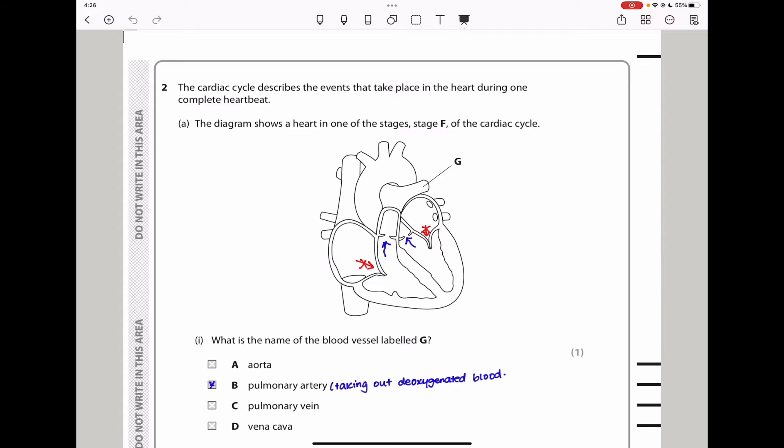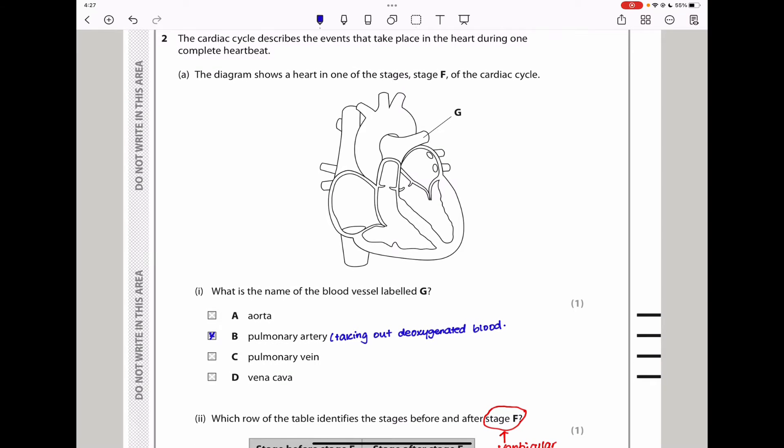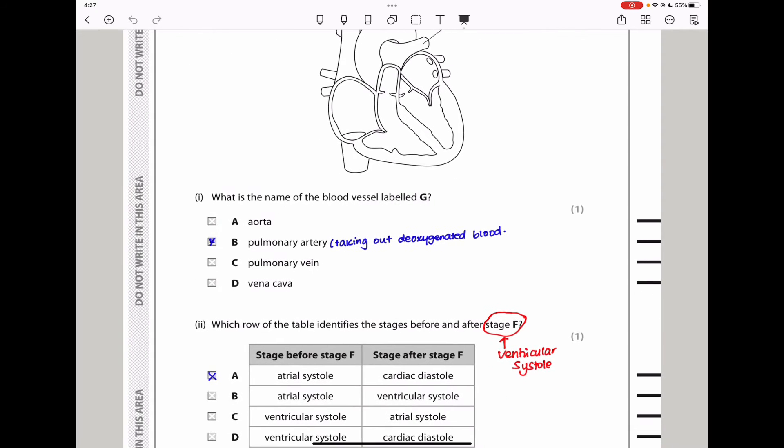Question 2. The cardiac cycle describes the events that take place in the heart during one complete heartbeat. The diagram shows a heart in stage F of the cardiac cycle. They say what is the name of the blood vessel labeled G. This blood vessel is connected to this side, which is the right side of the heart. The right side contains deoxygenated blood. So this is the right ventricle with the deoxygenated blood. When blood leaves the right ventricle, it has to go through the pulmonary artery taking the deoxygenated blood away from the heart to the lungs to be oxygenated.